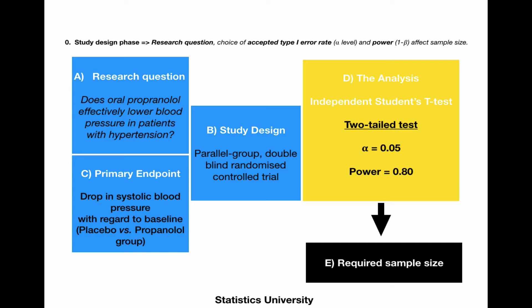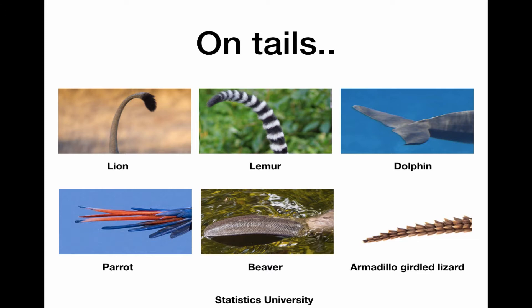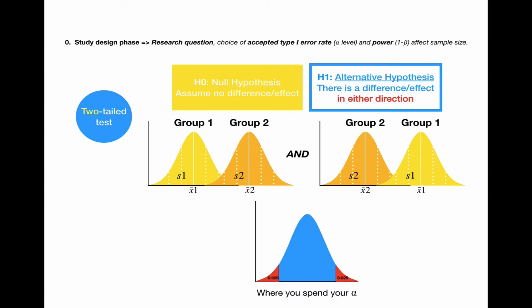Let's talk a little bit about tails. Well, I don't mean these kind of tails, but I mean statistical tails. If you use a two-tailed test, that means that you're interested in a difference or effect between groups, and you do not specify in which direction.